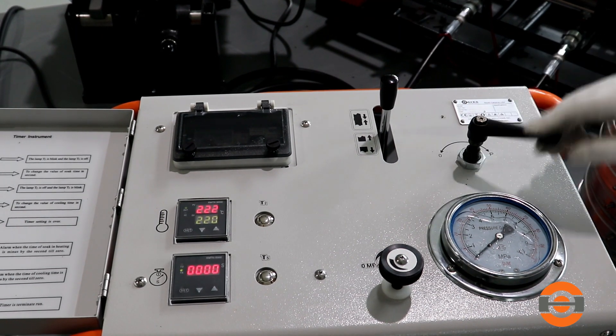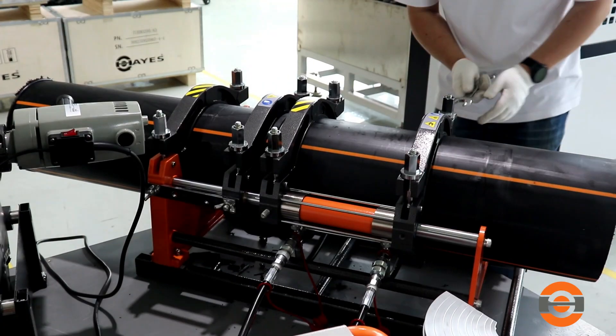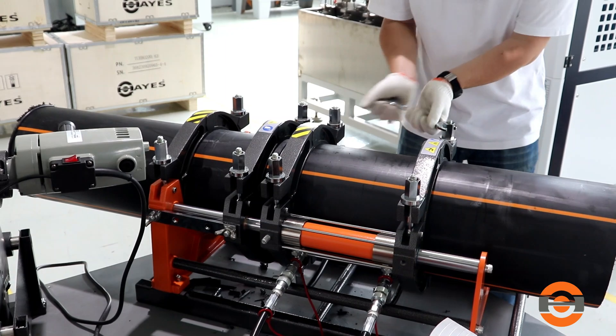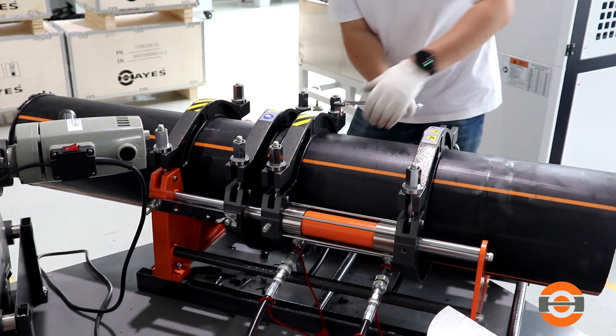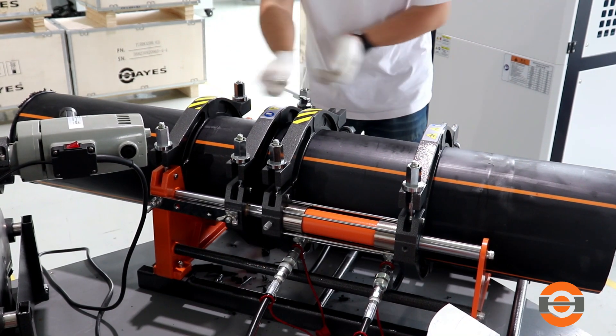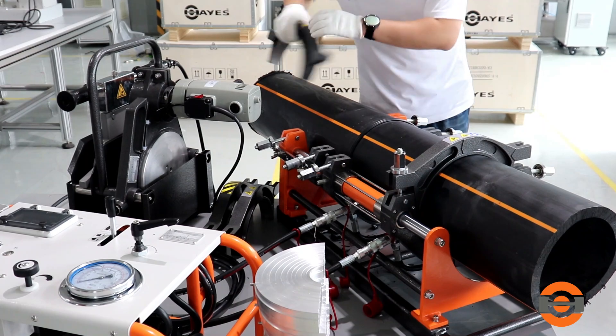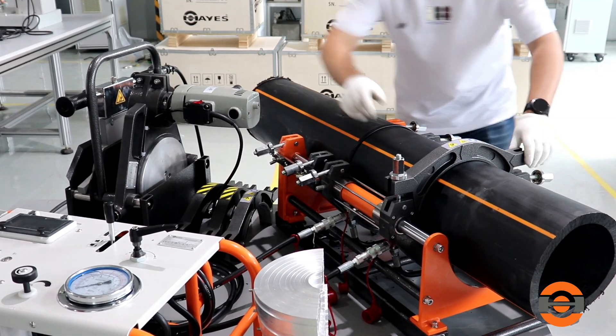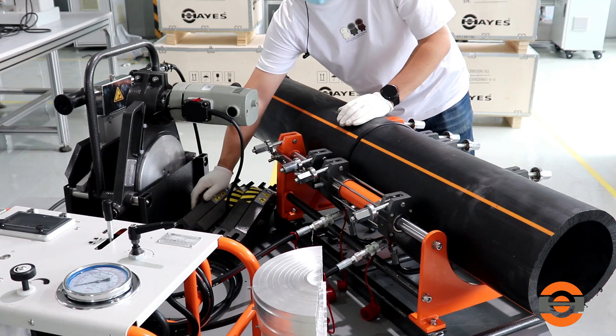Once the cooling time with pressure has ended, decrease the pressure to contact pressure or zero. Avoid pulling, installation, pressure testing, and rough handling for at least an additional 30 minutes after removal from the fusion machine. For ambient temperatures above 100 degrees Fahrenheit, additional cooling time may be needed. Do not try to reduce cooling time by pouring water or applying wet cloths.